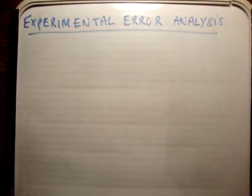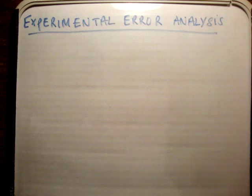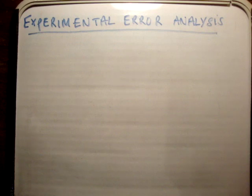In this video, I'd like to talk about experimental error analysis. This is something which is the bane of existence of many physics students or engineers. I'm going to try and show you that this is very simple, and it's not as difficult as people seem to think. It's very fundamental — something you need to be able to do. If you do it, you'll get a lot better results, and the analysis of your data will be a lot easier.